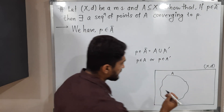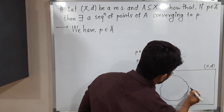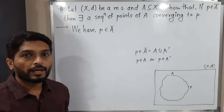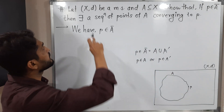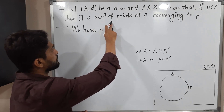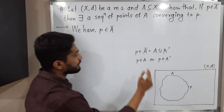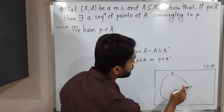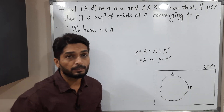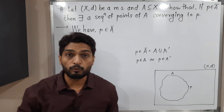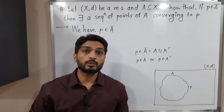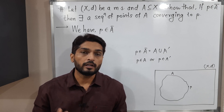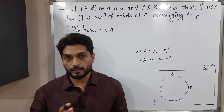So let us take some point P here. What do we have to prove? We have to prove that there exists a sequence of points of A which is converging to P. That means in this proof, we have to construct a sequence of points of A which is converging to P.